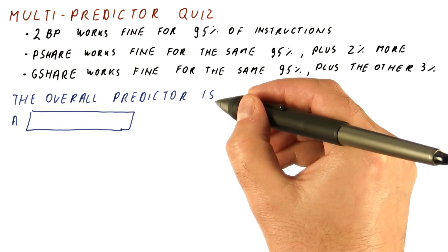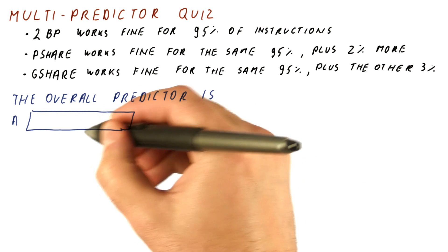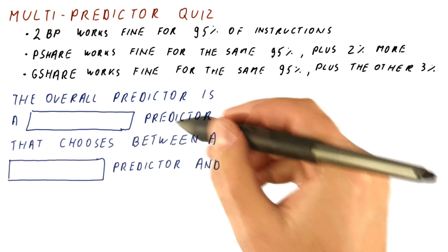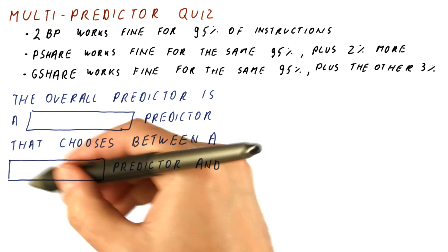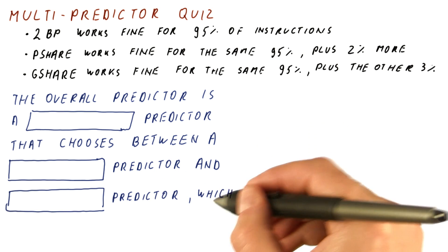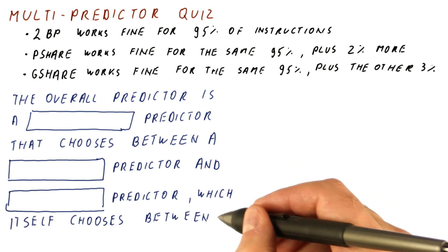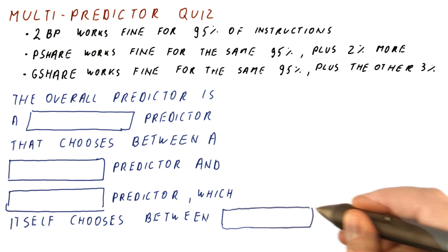The overall predictor that we will use is a what kind of predictor that chooses between a what kind of predictor and what kind of predictor. And this last predictor here itself will choose between what kind and what kind predictor.